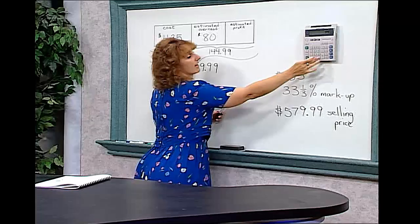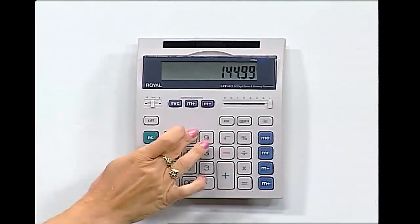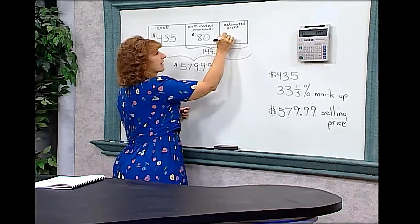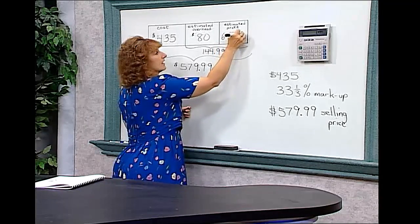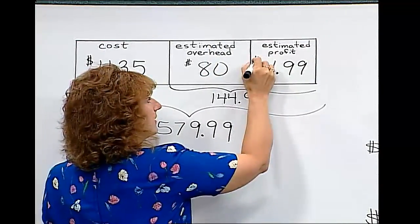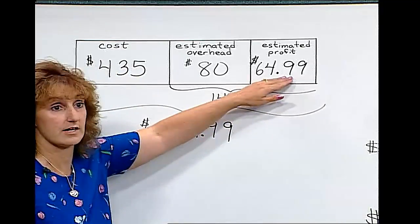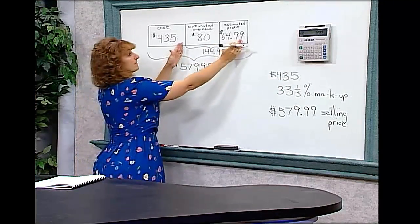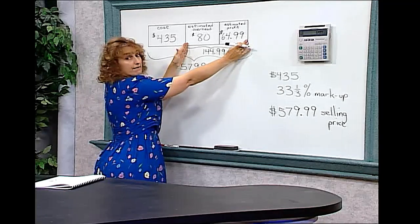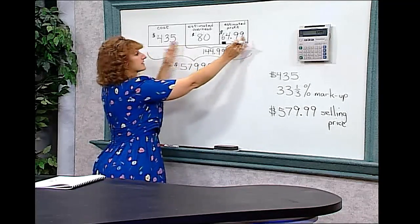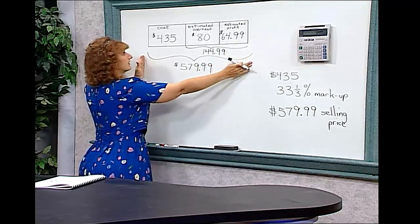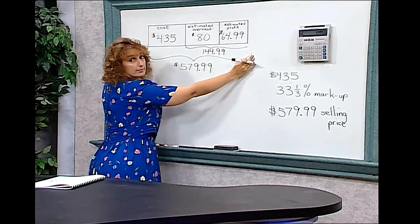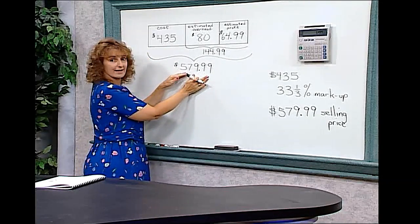One hundred forty-four dollars and ninety-nine cents minus the eighty dollars in overhead, we find that the company has an estimated profit of sixty-four dollars and ninety-nine cents. So remember, the markup is the overhead and the profit put together, and the selling price is the original cost to the store plus all the markup — this is the price you pay as a consumer.